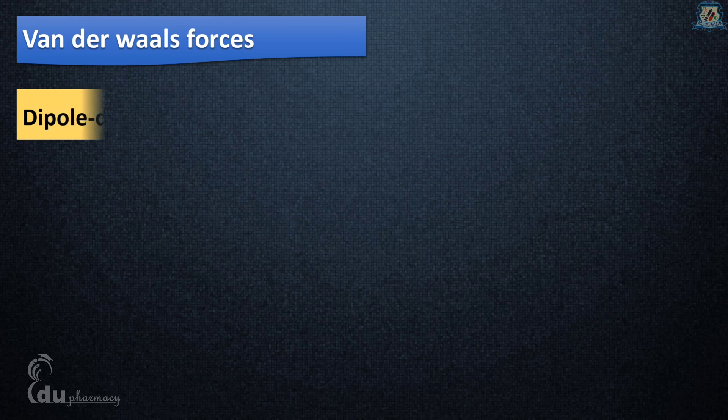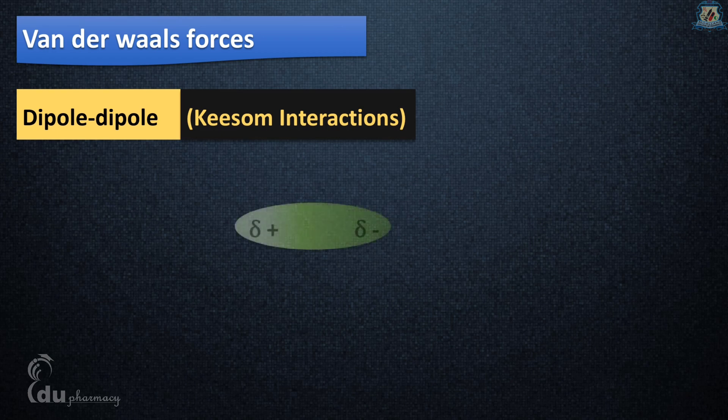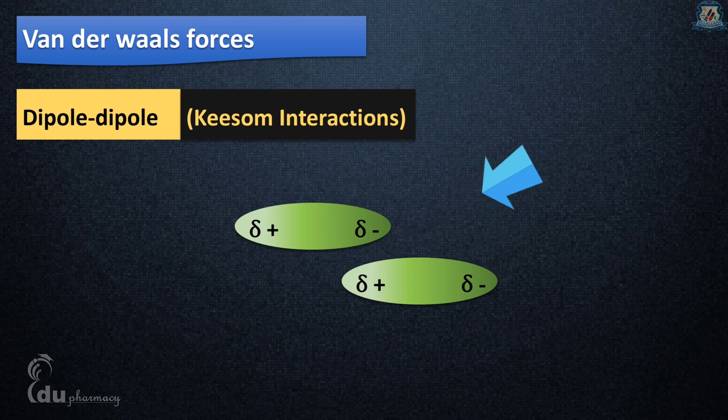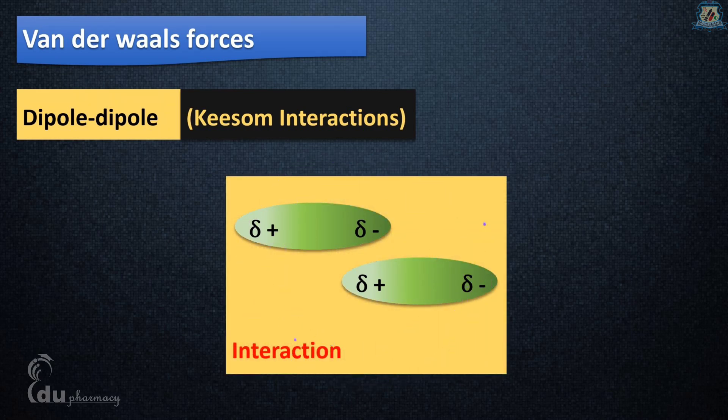Dipole-dipole forces, also known as Keesom interactions, are electrostatic forces between two permanent dipolar molecules. Generally, the positive end of one molecule is attracted to the negative end of another. As a result, the two molecules come closer, adding to the stability of the substance.